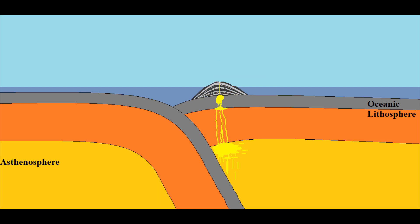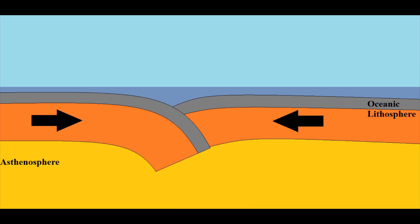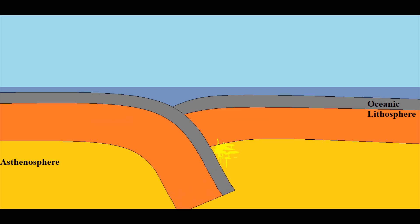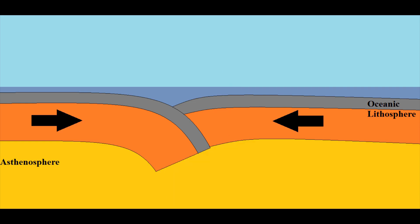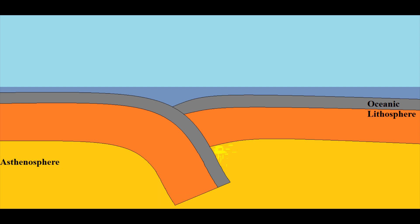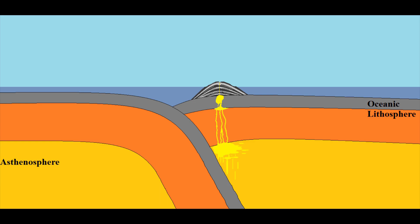The subducting plate over time will dive deeper into the upper parts of the mantle, creating earthquake activity as the two grind against each other. Subduction also generates melt. As the subducting plate travels deeper into the mantle, water trapped within the basalt flashes to steam, lowering the melting temperature of the asthenosphere, generating magma. The magma will begin to make its way to the surface, and eventually erupt from a volcano, creating a volcanic island arc.